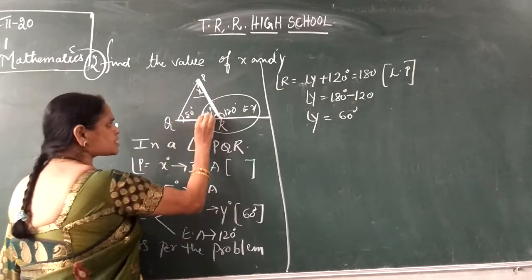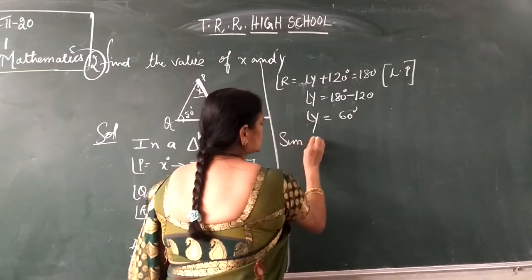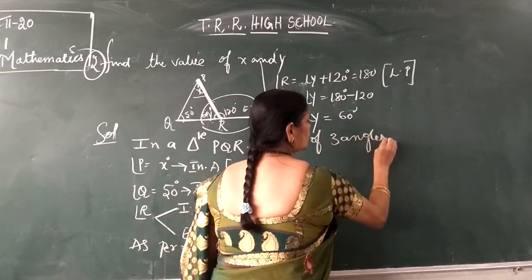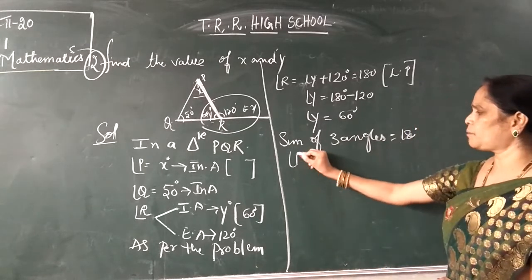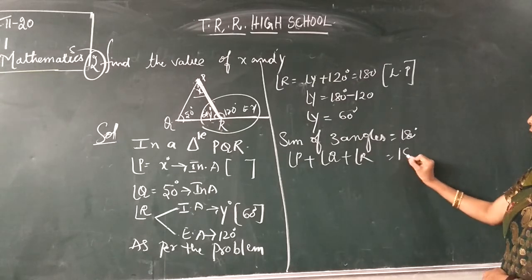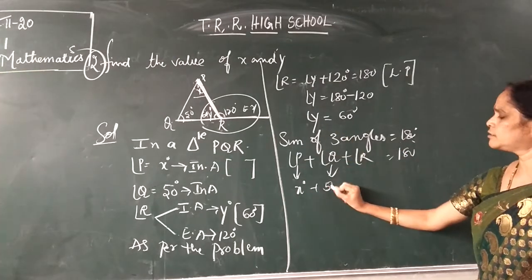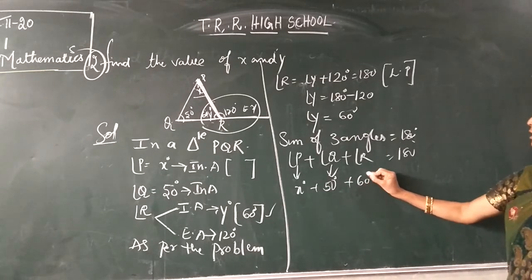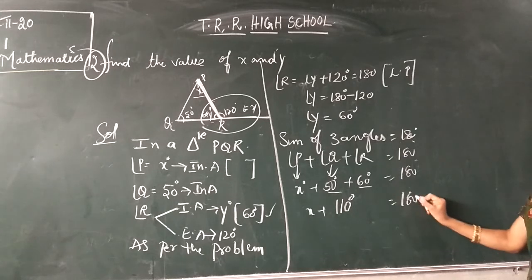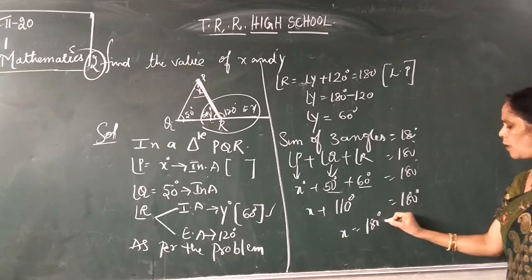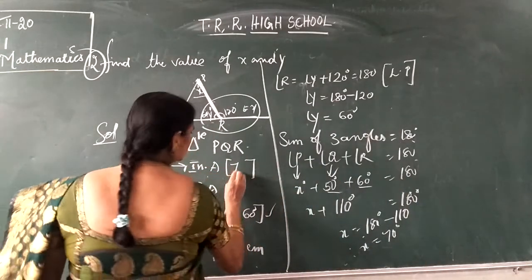After getting angle Y equal to 60 degrees, use the sum of three angles property. Angle P plus angle Q plus angle R equals 180 degrees. Substituting: x plus 50 plus 60 equals 180 degrees. So x plus 110 equals 180, giving x equal to 180 minus 110, therefore x is equal to 70 degrees.